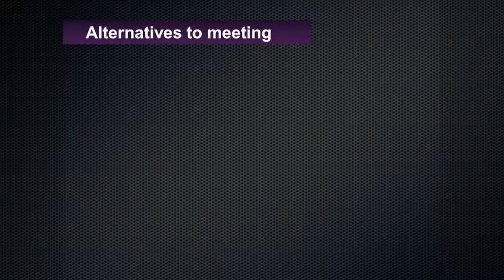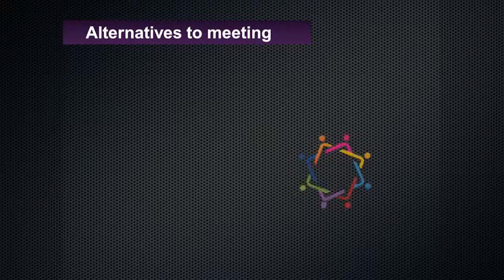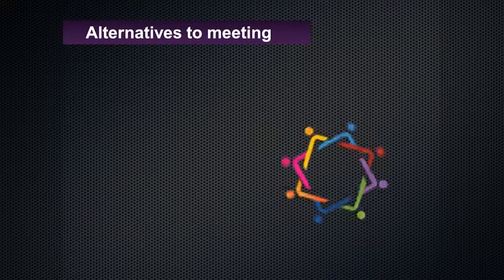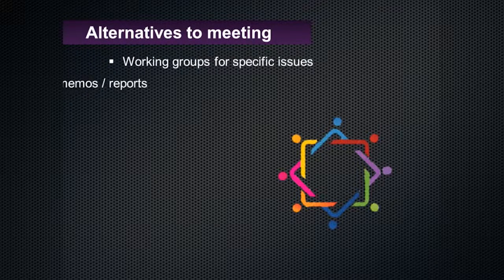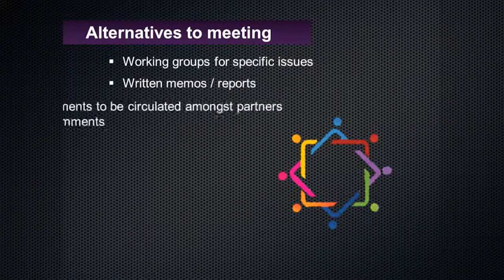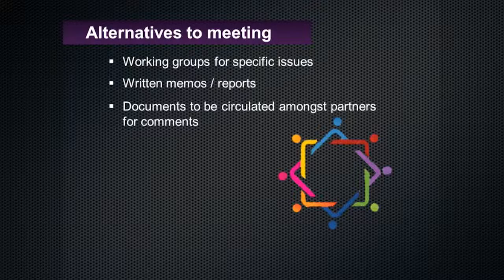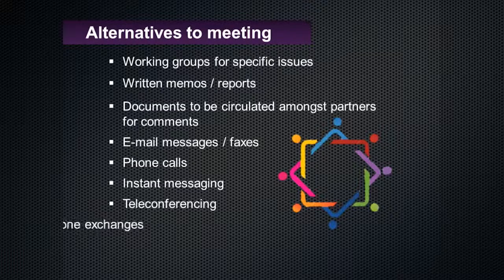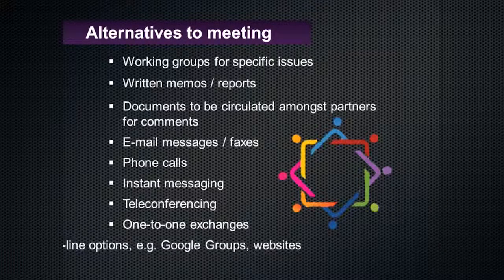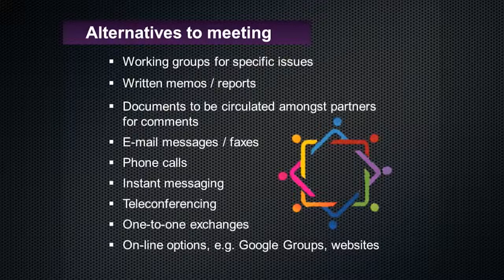It is also important to know that meetings are only one way to complement other coordination mechanisms. There are different alternatives to ensure participation and involvement of partners, such as: working groups for specific issues, written memos and reports, documents circulated amongst partners for comments, email, messages, faxes, phone calls, instant messaging, teleconferencing, one-to-one exchange, online options such as Google groups and websites, and video.